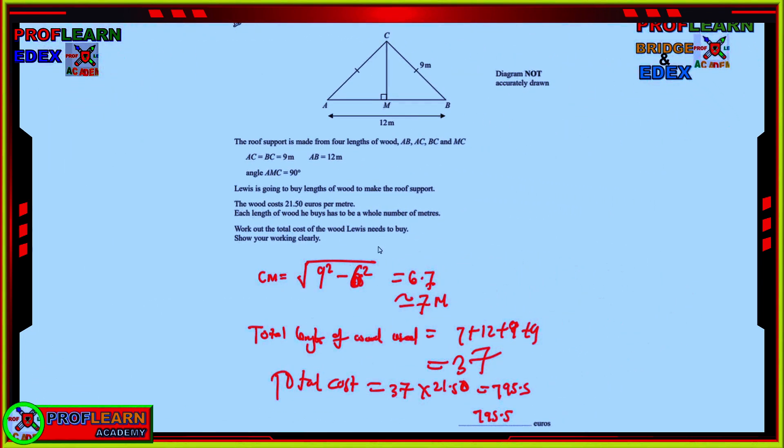We are supposed to work out the total cost of the wood that was needed. But remember, this is a roof. Remember, perimeter is distance around. But this is a roof which required this part, this part, this part, which is the base of 12 meters, and the height here. So, which means that we need to find the height using Pythagoras theorem.